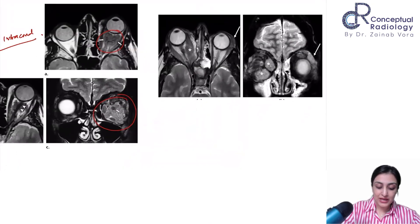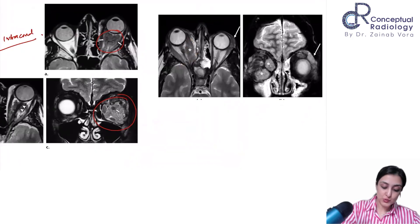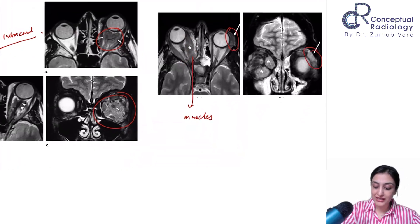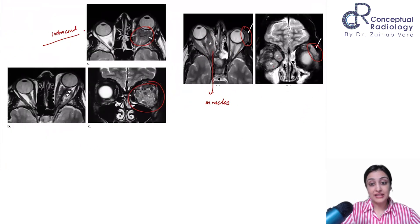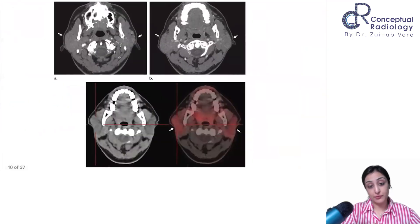In this case, the muscles are bulky without significant tendinous sparing. Even the contralateral lacrimal gland is showing enhancement. This is how your orbital pseudotumor appears.